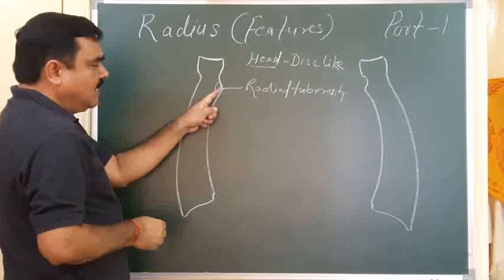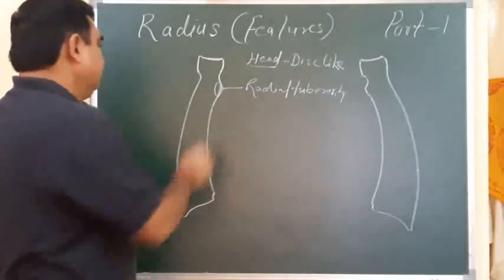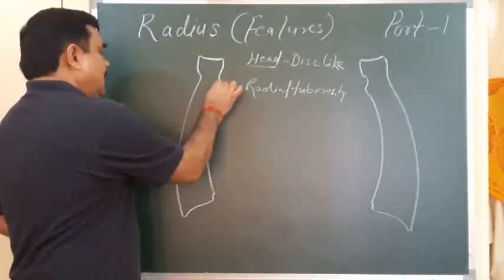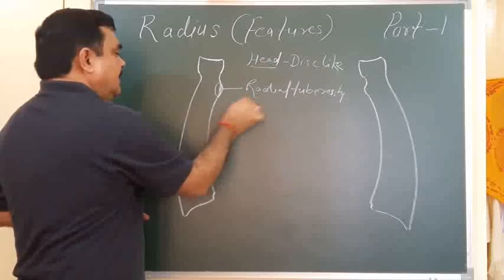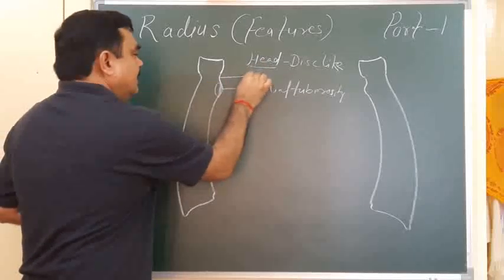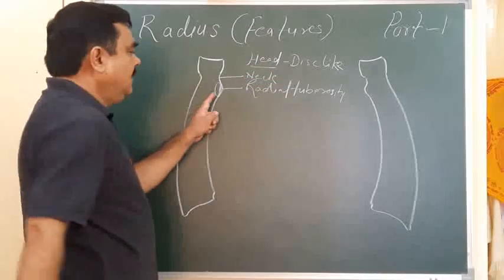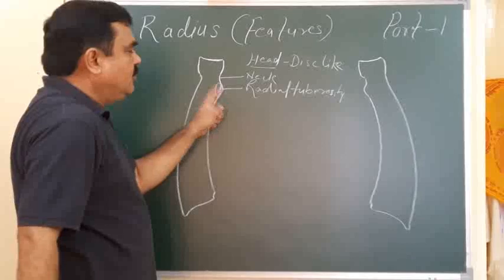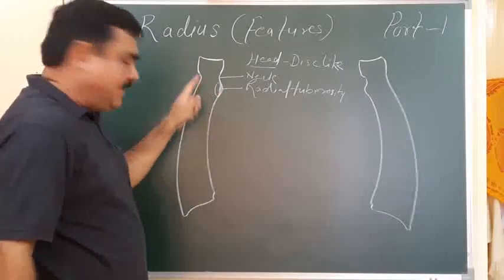The radial tuberosity has an anterior part which is smooth and a posterior part which is rough. So the upper end features: head, neck, and radial tuberosity.